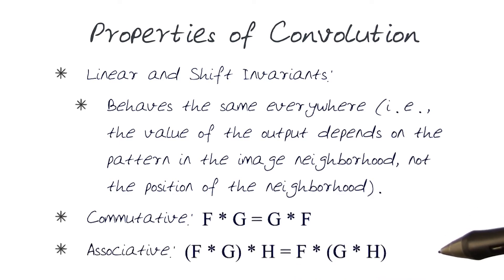It's also associative, which basically means that first I can do a convolution of F and G and then convolve with H, or I can change the order and do a convolution of G and H before, and afterwards I can do a convolution with F.